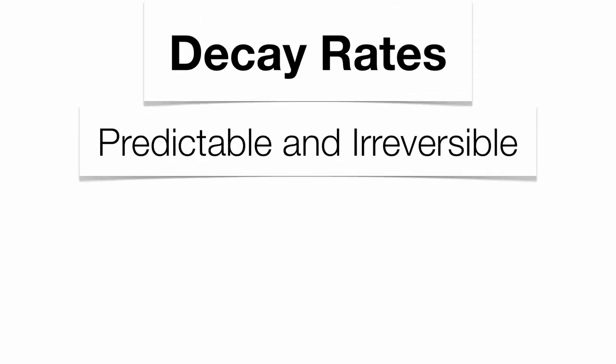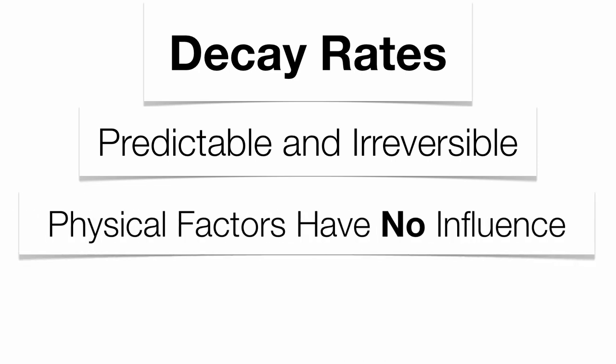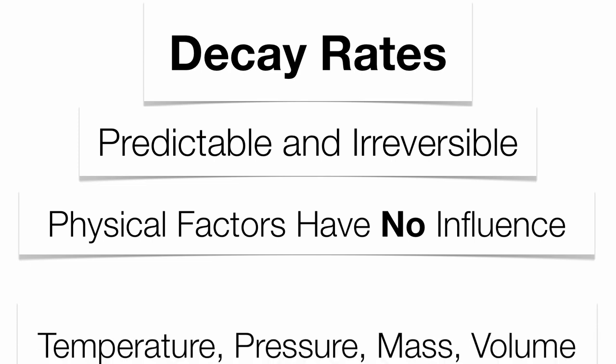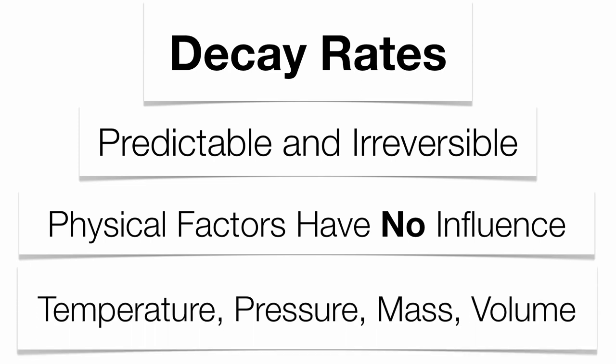When you take a look at your decay rates themselves, they're very predictable and they're irreversible. Once you change carbon-14 to nitrogen-14, you can't change it back. It's very predictable. That's why it's a very good time marker. The physical factors have no influence on the decay rate. So if you go through and you change your temperature, the pressure, the mass, the volume on a rock sample or fossil sample, it will have no change on the decay rate of your isotope itself.